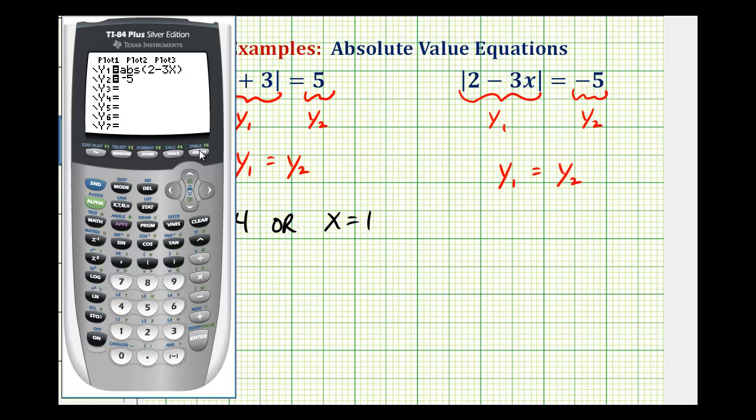We'll go ahead and press graph. And notice there's our v, but notice how the horizontal line is below the v, and there are no points of intersection. This is what it looks like graphically when there are no solutions to an absolute value equation.